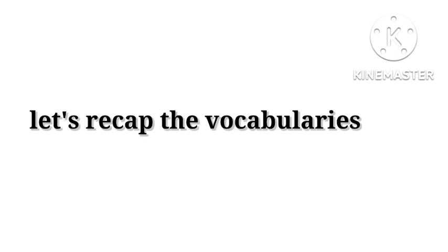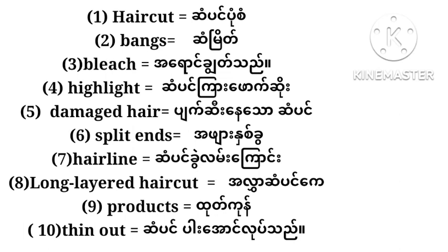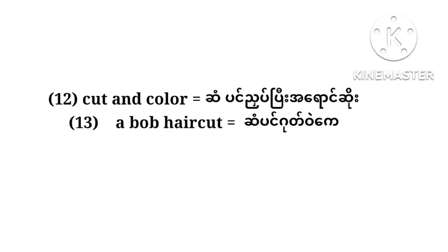So let's recap the vocabulary we have learned today: haircut, bangs, bleach, highlight, damaged hair, split ends, hairline, long layered haircut, products, thin out, cotton color, bob haircut.